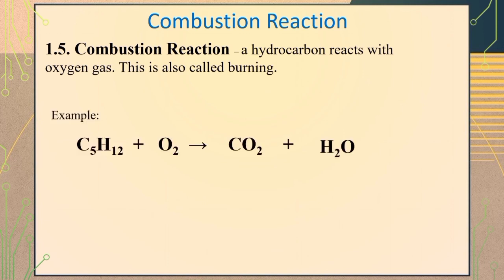For example, the combustion of pentane. To balance the equation, just simply adjust the coefficients by placing coefficient of 6 before the chemical formula of water, coefficient of 5 before the chemical formula of carbon dioxide, and coefficient of 8 before the chemical symbol of oxygen. Make sure that the coefficients are the lowest possible number.